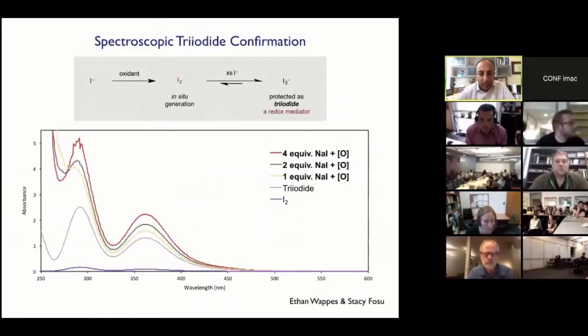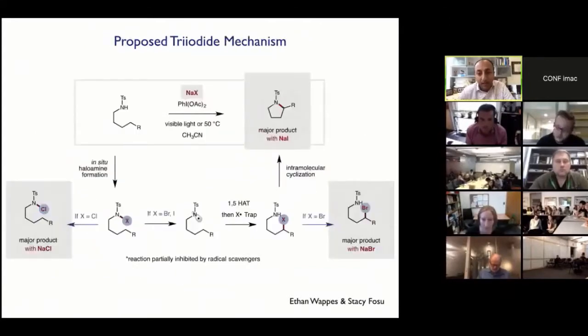So really the premise of this chemistry, the hypothesis originally was that triiodide would be a great syringe pump for iodine. And so we wanted to test whether or not this was in fact the case. So using UV-Vis spectroscopy as one tool, we find iodine here at the bottom in purple, triiodide in gray above it. And under our reaction conditions, we see these diagnostic triiodide peaks, leading us to believe that triiodide is in fact a key to solving this problem.